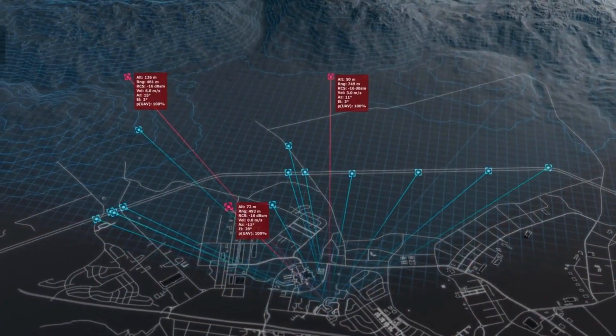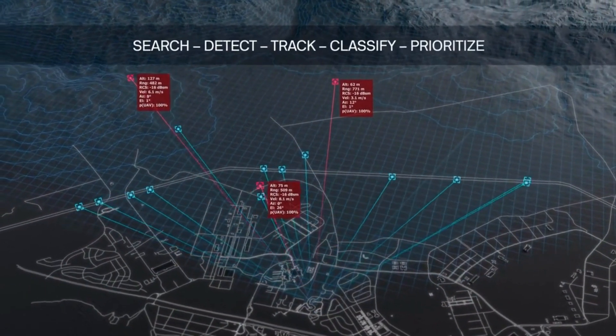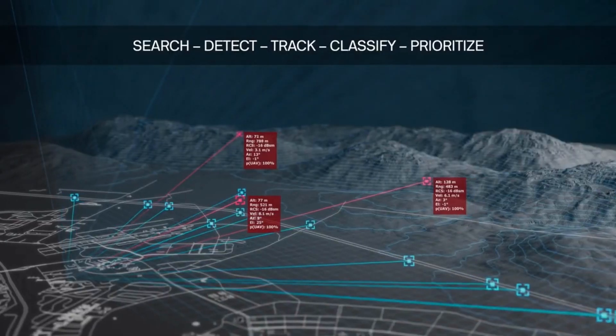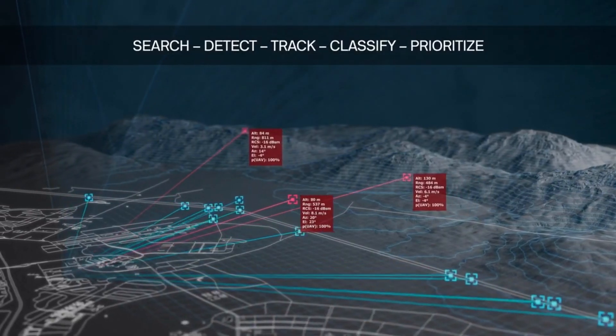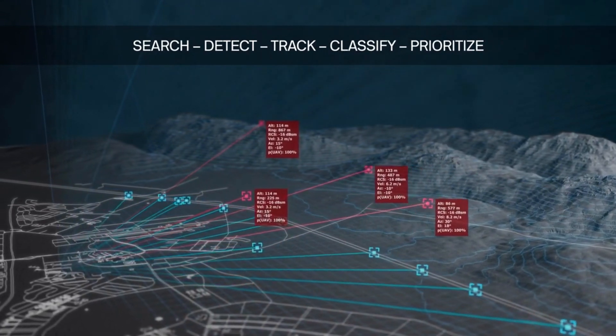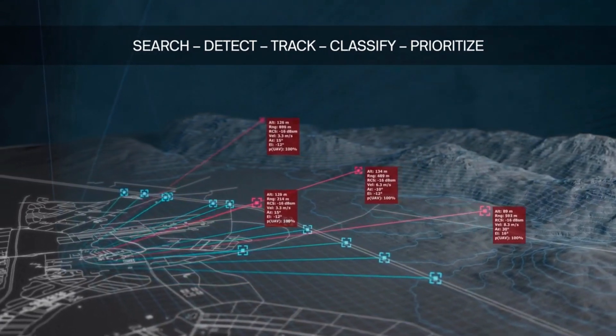For the counter UAS mission, Echoshield searches, detects, tracks, and classifies airborne objects at ranges of 1 kilometer for nanodrones to 11 plus kilometers for larger objects, using rich radar resources to prioritize timely and accurate data.